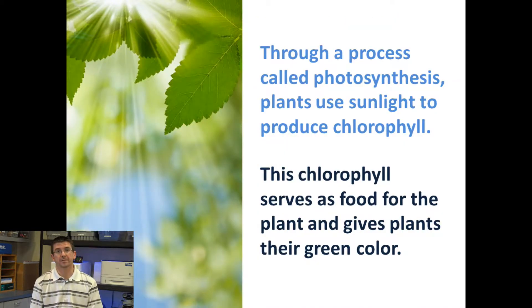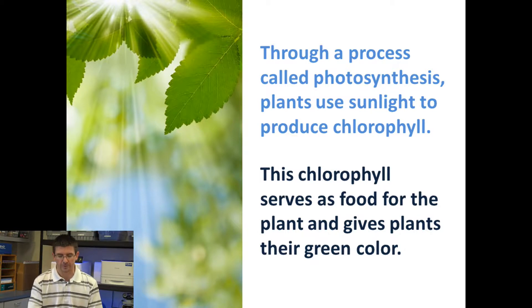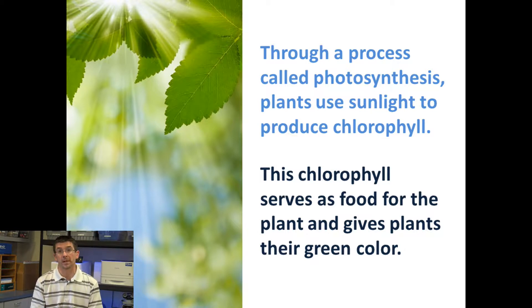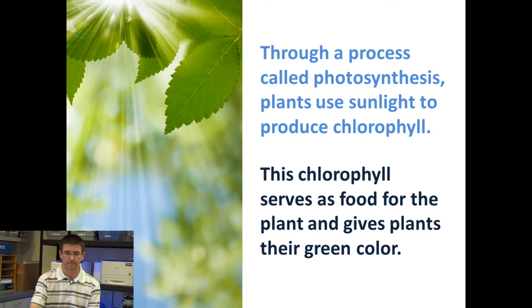Through the process of photosynthesis, plants use sunlight to produce food using chlorophyll, which is also what gives the plant its green color.